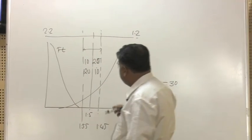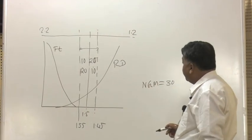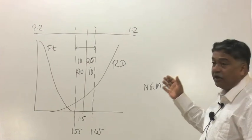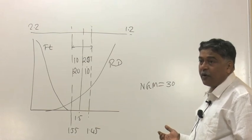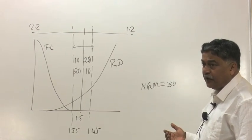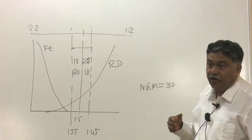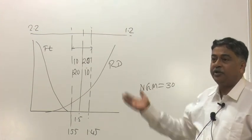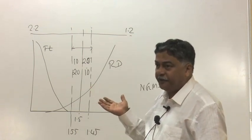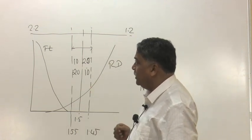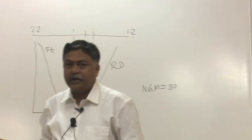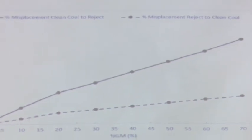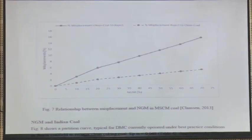So if within the NGM range the percentage of material on the cleaner coal side is more, misplacement could be more. But this is the broad general trend — we may not always get this relationship, but by and large in every operation we find that misplacement is more for clean coal to reject, or lighter fraction to heavier fraction.